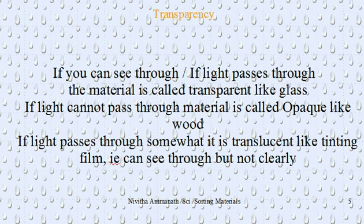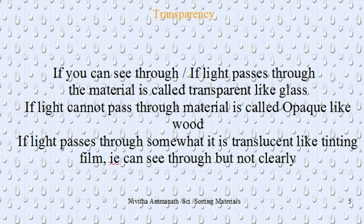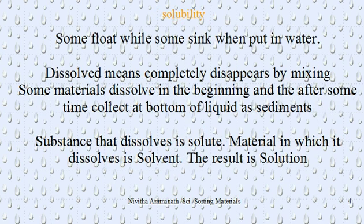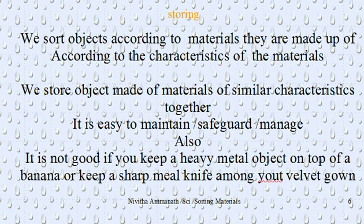Transparency is another property of a material. If you can see through a material and light passes through it, it is called transparent — for example, glass. Wood has the property of being opaque, meaning light cannot pass through; if you hold a wooden plate, you cannot see through it. If light can pass through partially and you can see things on the other side a little bit, it is called translucent — like a tinted film. So materials can be transparent, opaque, or translucent. We also have the properties of hard or soft, soluble or insoluble, and having lustre, and based on all these properties we can group objects.